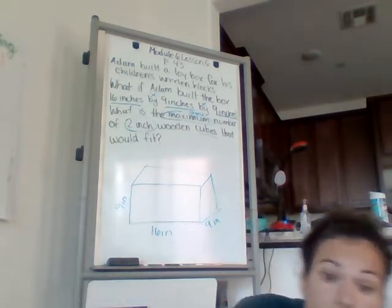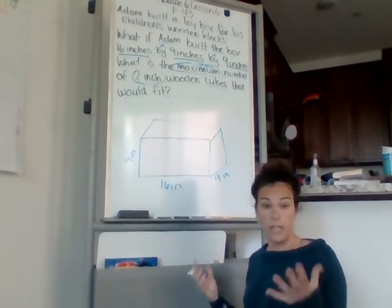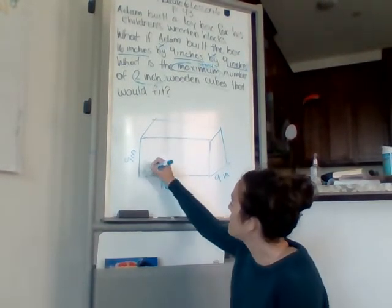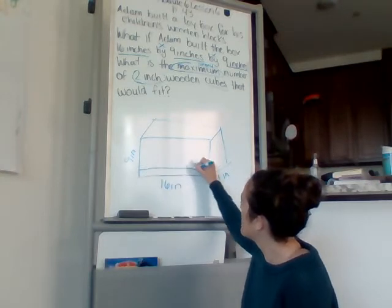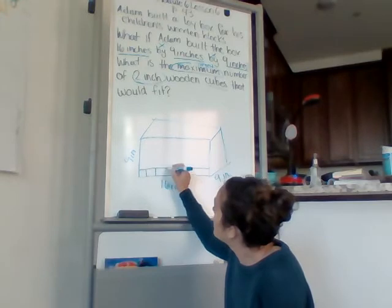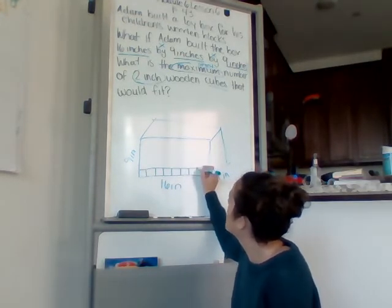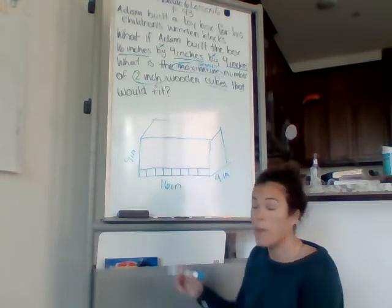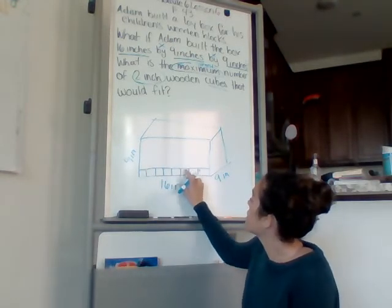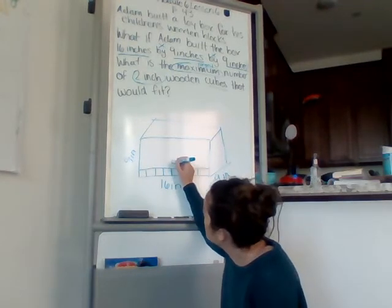So if we're using the same strategy, I'm going to kind of think about it the same way. So let's look at this 16. And our blocks are 2 inch wooden blocks again. So 2, 4, 6, 8, 10, 12, 14, 16. So how many blocks is that? 2, 4, 6, 8, 10, 12, 14, 16. 1, 2, 3, 4, 5, 6, 7, 8. 8 blocks.